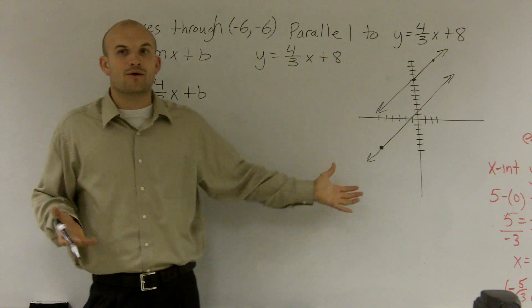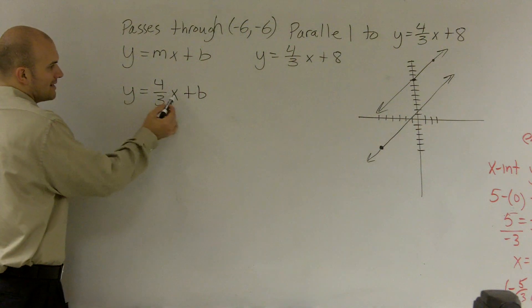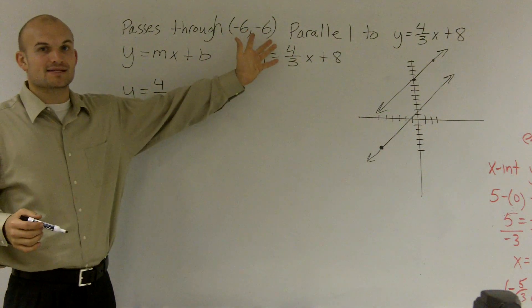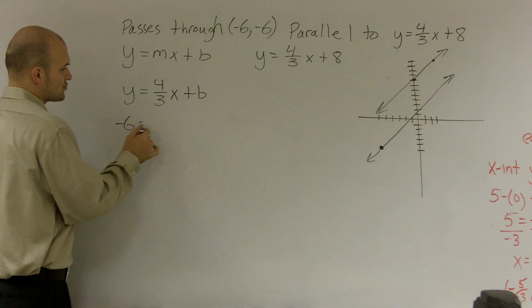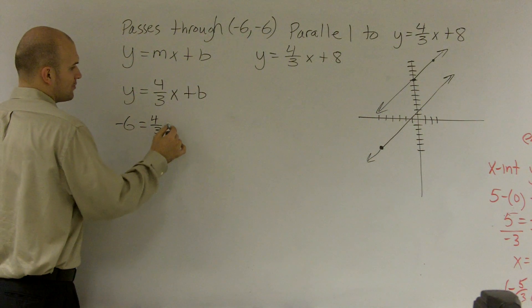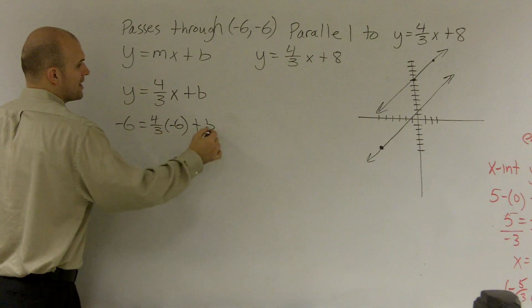So we need to determine, how can we figure out what our new y-intercept is? Well, we have a y and an x, and we also have a point. Since it has to go through this point, we can plug in these two points for our new y-intercept.